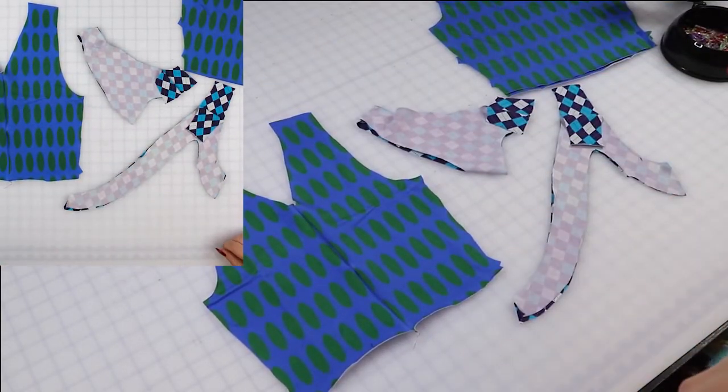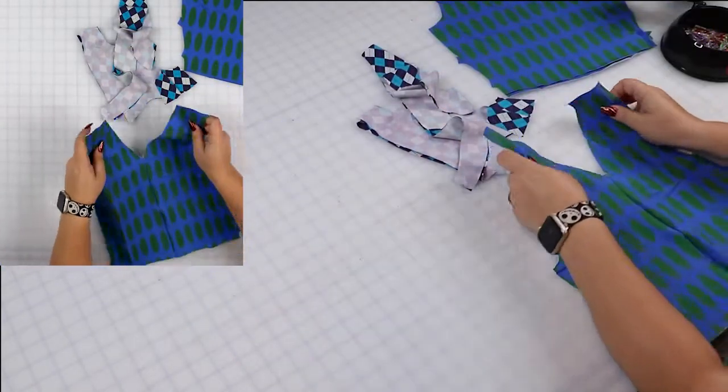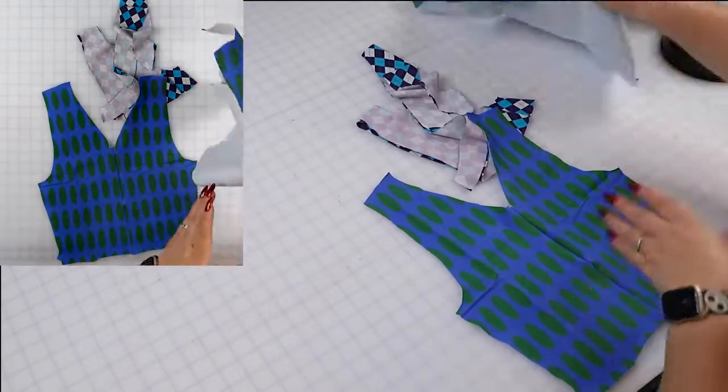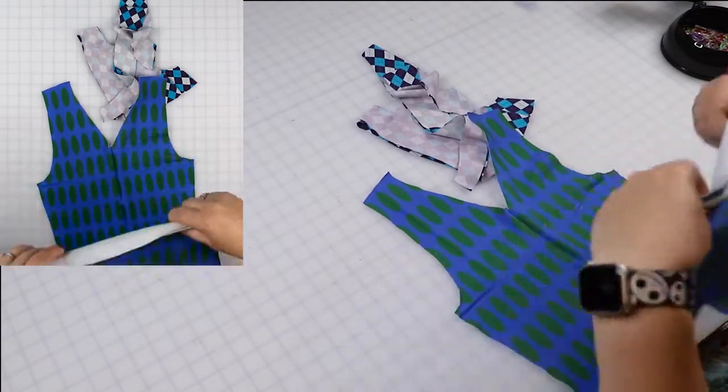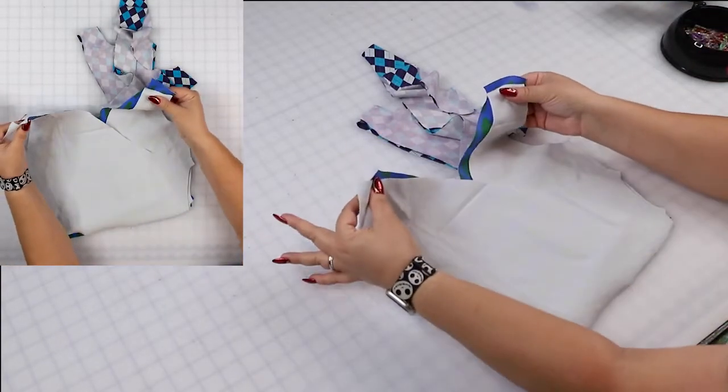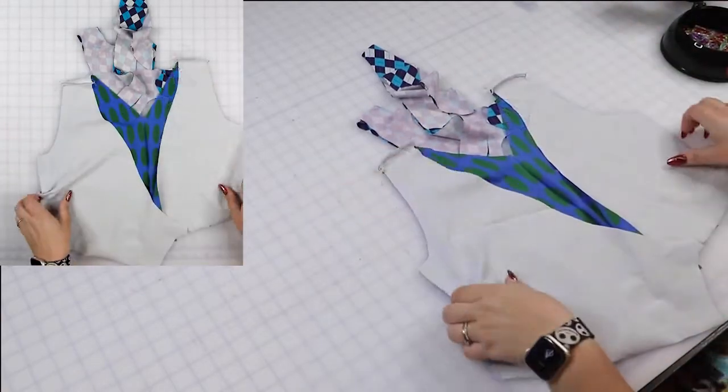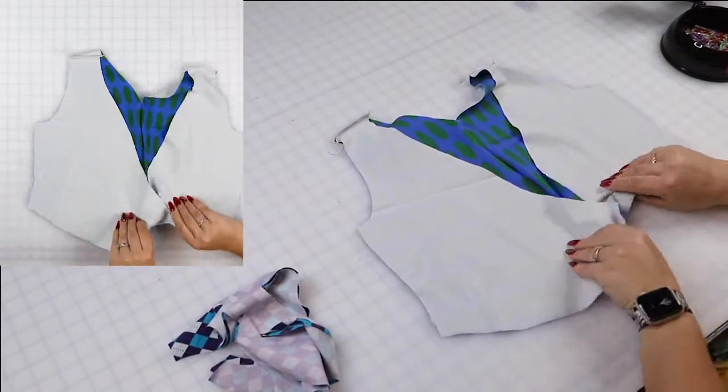Now we're going to sew the shoulder pieces for both the front and the back. So take your back and the two front pieces, and I'm going to place them right sides together and sew the shoulder seam. All right, your shoulder seams of the main pattern are sewn.